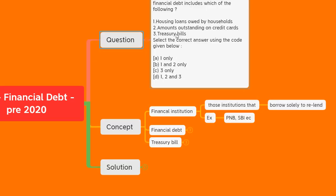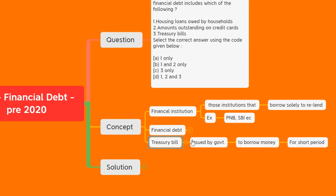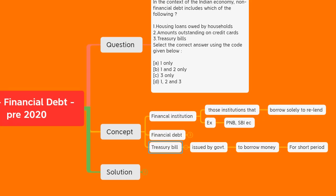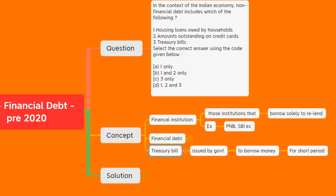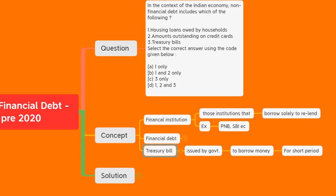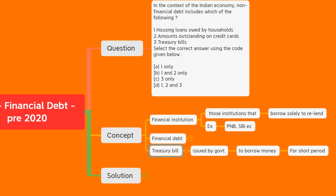There is one more concept here: Treasury bills. Treasury bills are issued by the government to borrow money for a short period of time. Whenever the government needs money and its resources like taxes are not enough to run different schemes or the government's daily functions, it issues Treasury bills — a short-term instrument, usually for less than one year — to borrow money from the market.